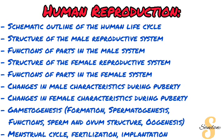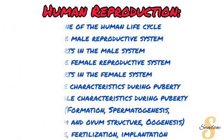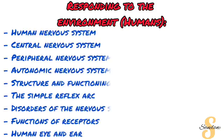The next topic is human reproduction. Here we look at quite a number of things: the schematic outline of the human life cycle, the structure of the male reproductive system and the functions of each part, the structure of the female reproductive system and the functions of its parts, changes in characteristics during puberty in males and females, gametogenesis — including spermatogenesis, the functions and structure of sperm and ovum, and oogenesis. You'll end this section with the menstrual cycle, fertilization, and implantation.